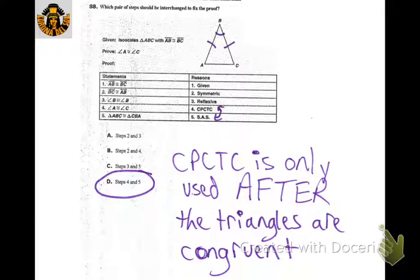Very similar here — we prove the triangle congruent to itself when you reflect it. The big thing to notice is that the order is wrong because CPCTC is listed before the triangles were even proved congruent. We need to put the triangles congruent first, then start saying things about corresponding parts.